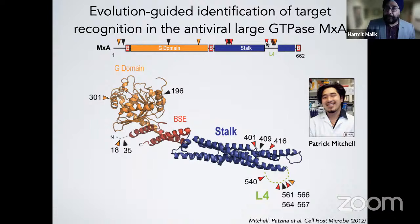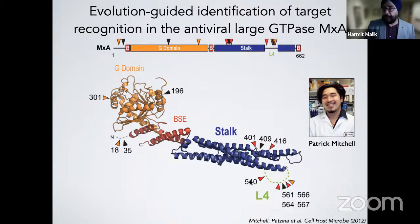Patrick found that despite MXA being mostly well conserved in evolution, there are 12 amino acid positions where MXA changes very rapidly — no two primates have exactly the same set of residues at these 12 positions. On the crystal structure of MXA, these positions are not randomly distributed but concentrated in hotspots of positive selection. The biggest hotspot is an unstructured loop called Loop L4, containing five of the twelve rapidly evolving positions. We hypothesized that this may represent a rapidly evolving surface that interfaces with the virus.